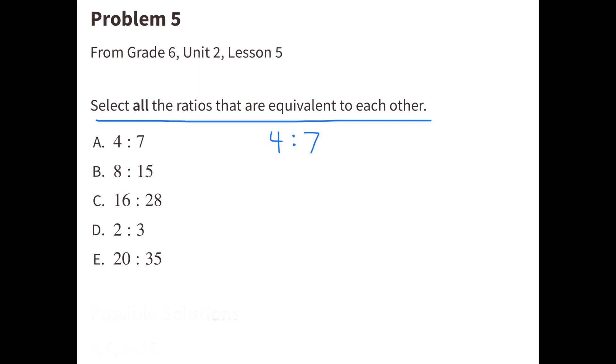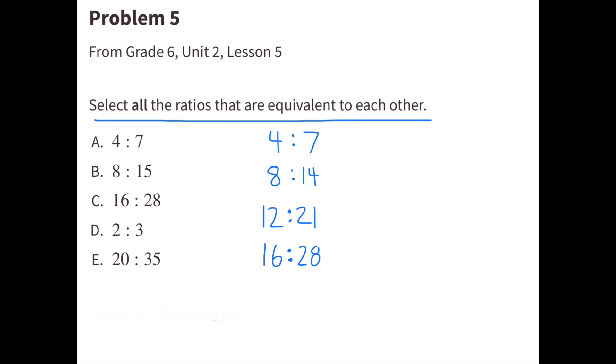Let's start with the ratio 4 to 7. 4 times 2 is 8, and 7 times 2 is 14. 4 times 3 is 12, and 7 times 3 is 21. 4 times 4 is 16, and 7 times 4 is 28. 4 times 5 is 20, and 7 times 5 is 35. Now select all the ratios that are also in the ratio list that I created. A 4 to 7, C 16 to 28, and E 20 to 35.